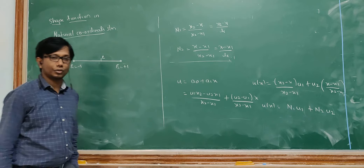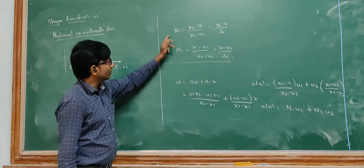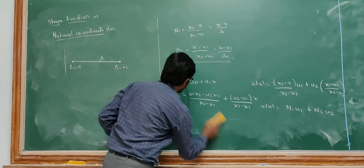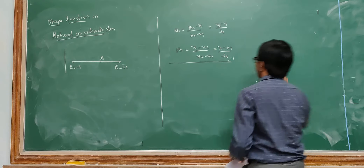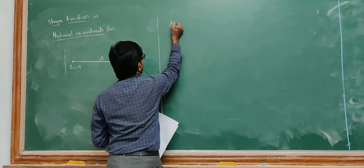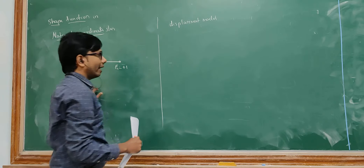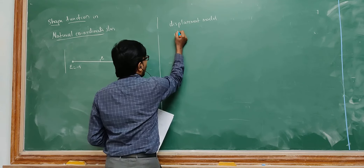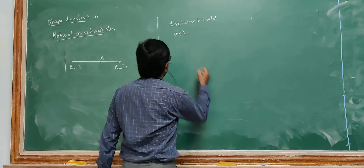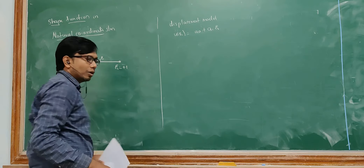Now we will be seeing how to derive the shape function in the natural coordinate system. In the previous we studied how to derive the shape function in the global coordinate system. Now we will derive the equation in the natural coordinate system using the same procedure to get N1 and N2. We write the displacement model in terms of the natural coordinate system: u of zeta equals a0 plus a1 times zeta. This is the linear model written in terms of the natural coordinate system.